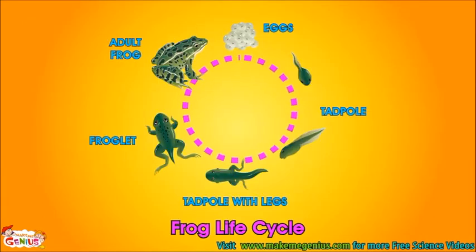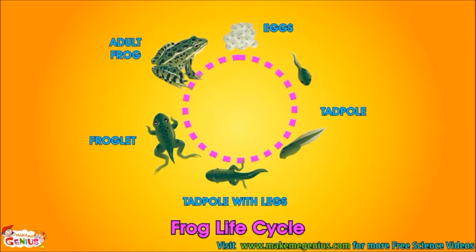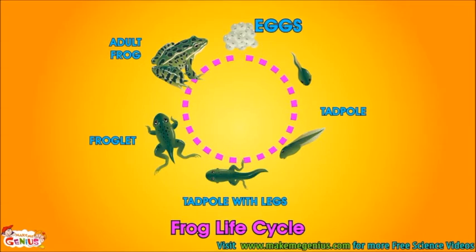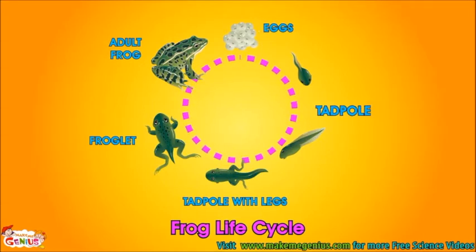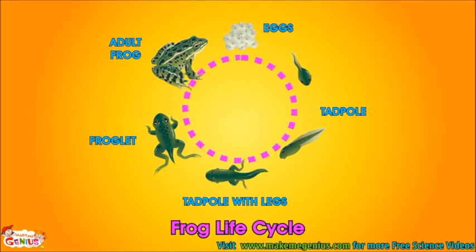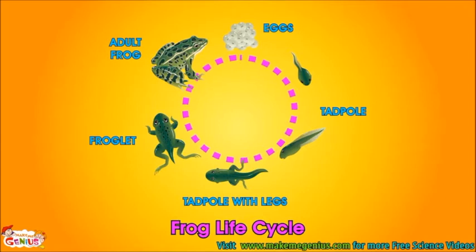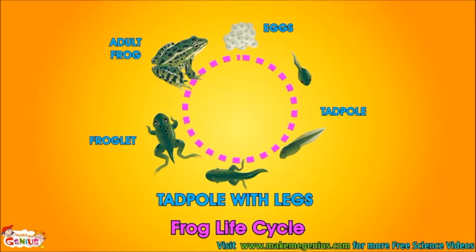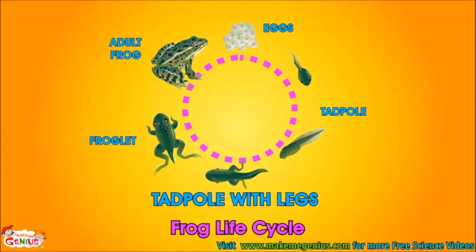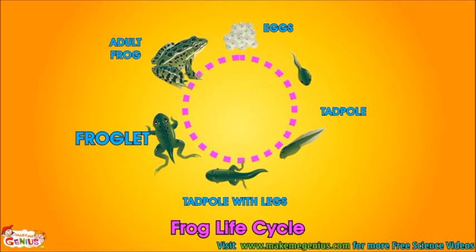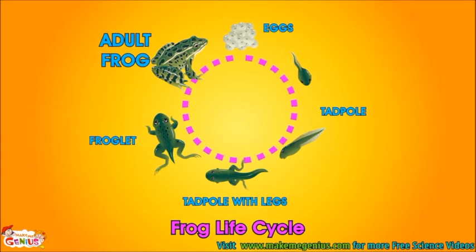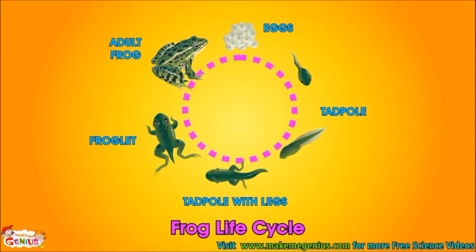Look at this complete life cycle of a frog. It starts from eggs, then tadpoles come out who are like little fish. Slowly a change happens, and tadpoles develop legs and lungs, and then they become a complete frog.